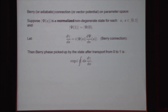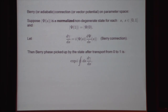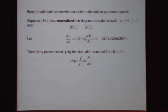Suppose we have a non-degenerate state Psi of S which depends on a parameter S going from zero to one, normalized. We let d gamma by ds equal the inner product of Psi with d Psi over ds — that's the Berry connection, coming from the adiabatic theorem. The phase picked up after transporting from zero to one, where Psi(1) equals Psi(0), is just the exponential of i times the integral of d gamma ds. So d gamma ds is a one-form on the parameter space.